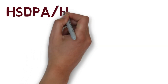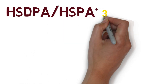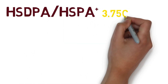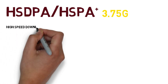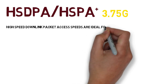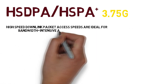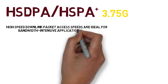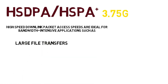HSDPA, also known as HSPA Plus, is considered 3.75G. High Speed Downlink Packet Access speeds are ideal for bandwidth-intensive applications such as large file transfers